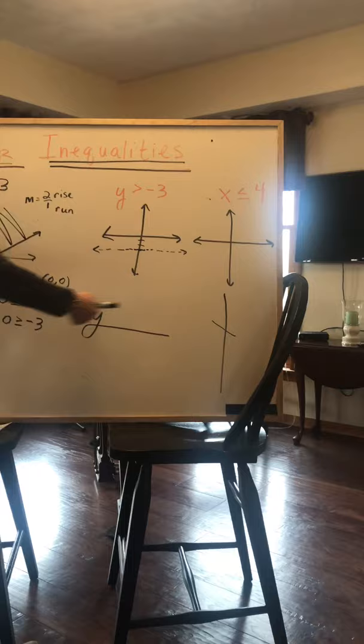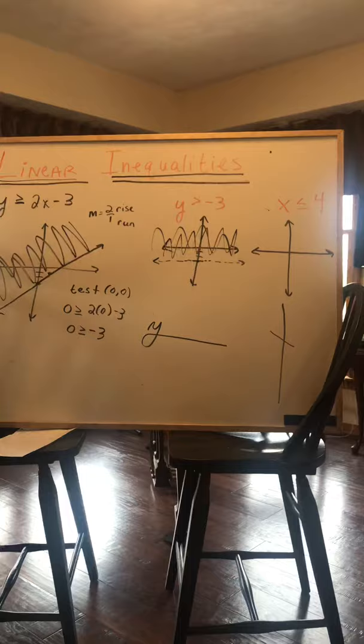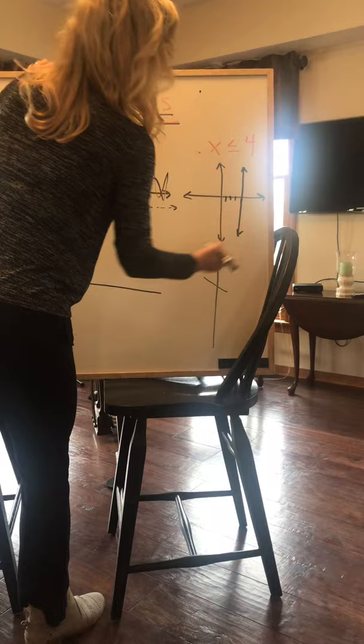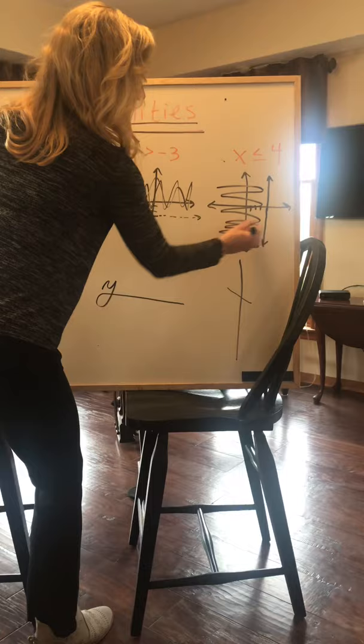As for the x, x is less than or equal to 4. So we go 4 on the x axis. And it's or equal to, so that's a solid line. And it's less than or equal to. So less than means we're going back towards negative infinity. We're going to shade that way.